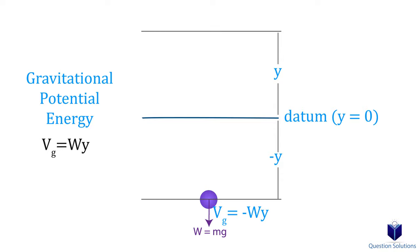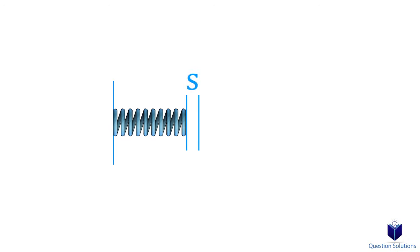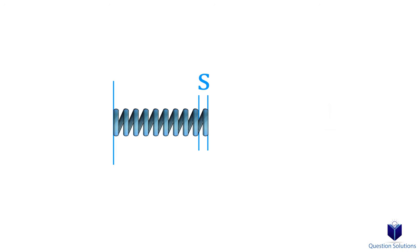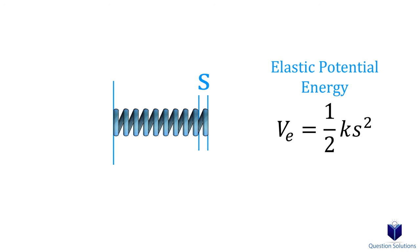Lastly, let's discuss elastic potential energy. When a spring is extended or compressed a certain distance, the elastic potential energy can be found using this equation. K is the stiffness of the spring.